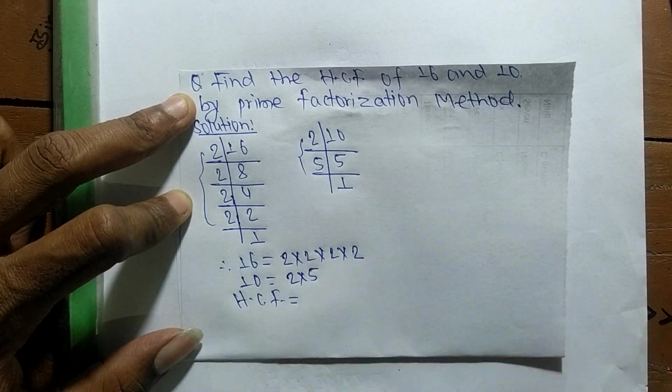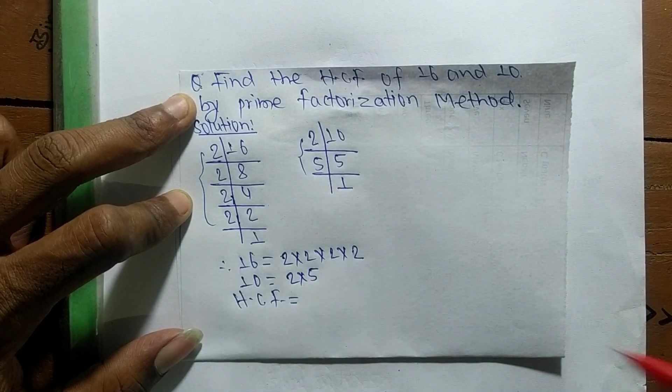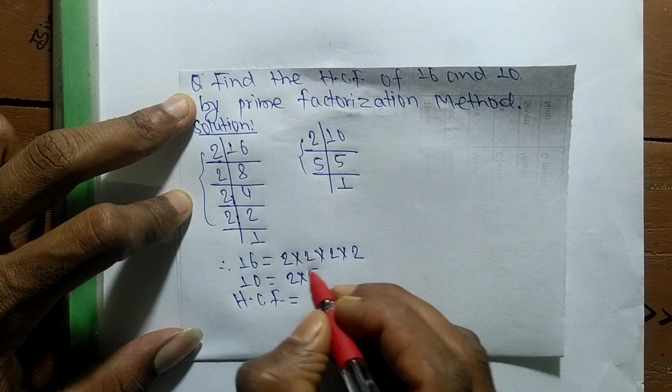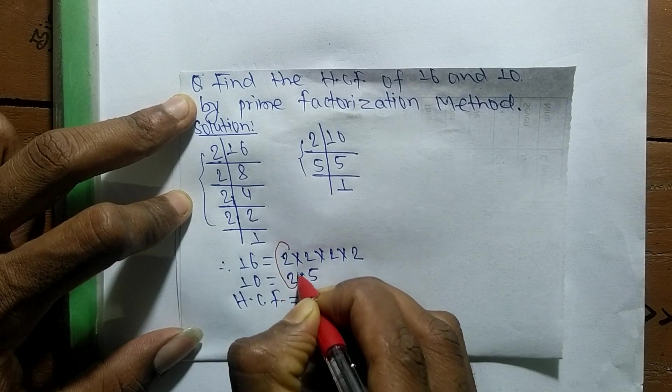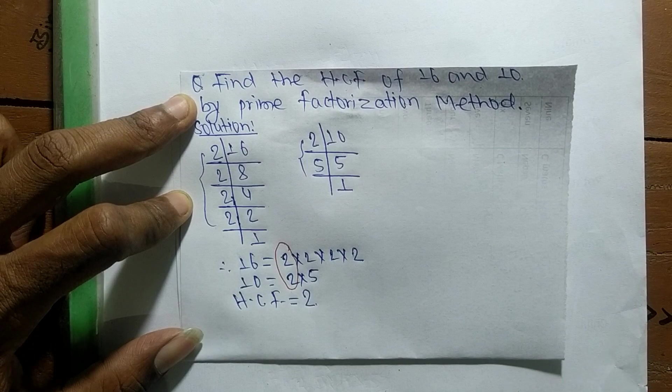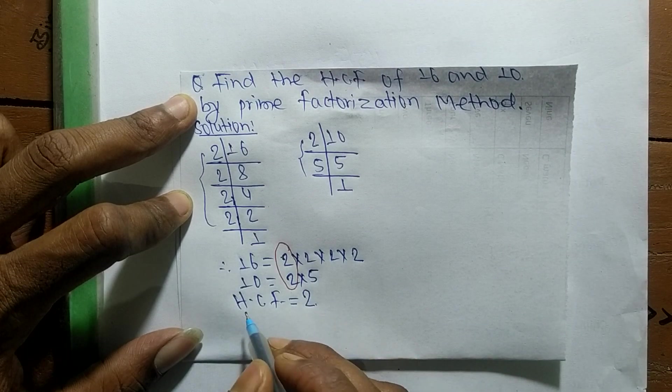The HCF is equal to the common elements in the prime factors of 16 and 10. The common factor here is 2, so the HCF equals 2. Therefore, 2 is the highest common factor of 16 and 10.